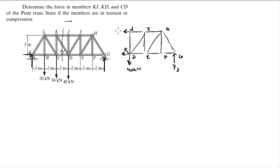And this would be JK, this would be KD, and this would be CD. So the first thing we're going to find is let's find this angle phi. We know that phi, this angle right here, we call it phi. Phi is equal to the tangent inverse of 3 over 2, which is equal to 56.3 degrees.